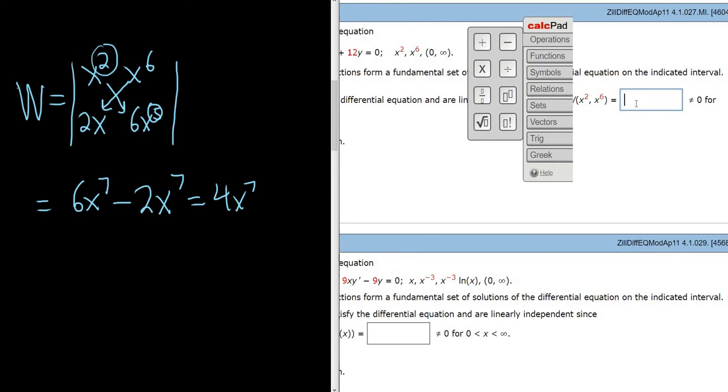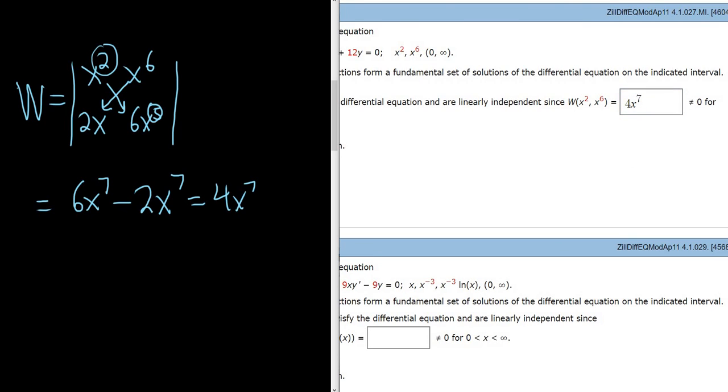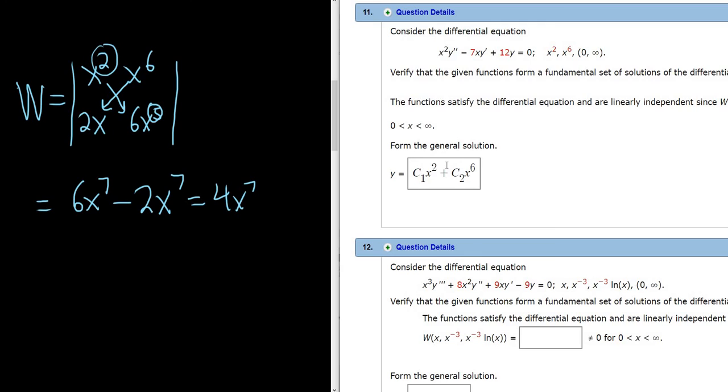So we just come over here and we type in 4x to the seventh. And then for this part here, I'll go ahead and write it down. So basically, because this is not equal to zero for all x, well, for all x not equal to zero. Notice the interval here is zero to infinity, so they did a good job there.